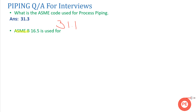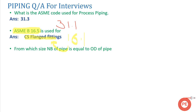Moving on to the next question: what does ASME B16.5 refer to? There are different standards for different things. ASME B16.5 gives you CS flange ratings. If someone asks you about B16.1, that is also for flanges, but it is the standard for gray cast iron flanges.